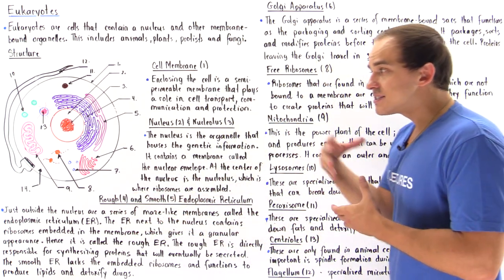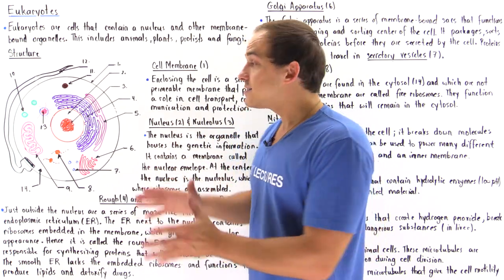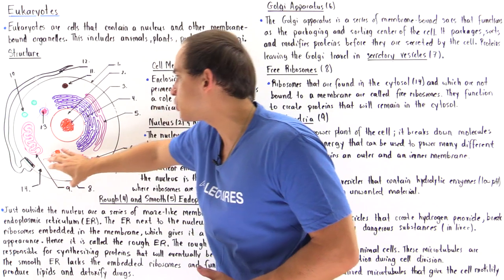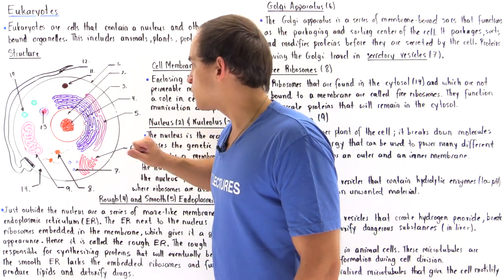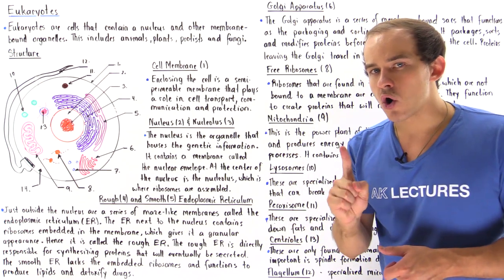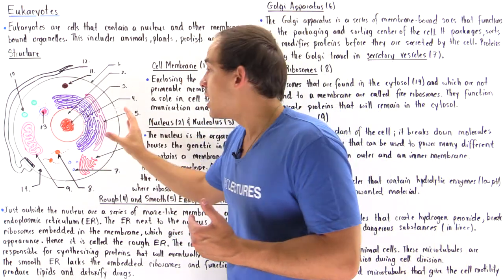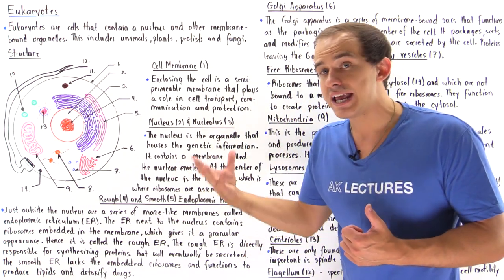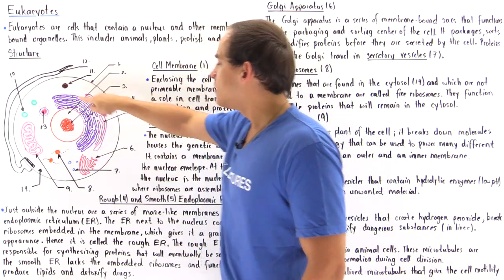The cytoplasm and cytosol are sometimes confused. The cytoplasm is the region between the cell membrane and the nucleus, and it includes all the organelles and structures found there — the mitochondria, ribosomes, Golgi apparatus, vesicles, ER, and everything else. The cytosol, however, is the cytoplasm minus all the structures and organelles. If we remove all the organelles, we are left with just the fluid region, known as the cytosol, and free ribosomes move about in this fluid.